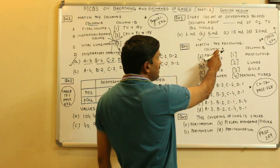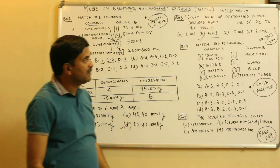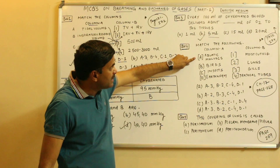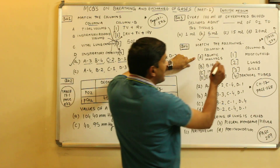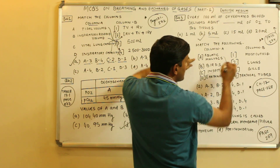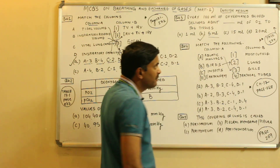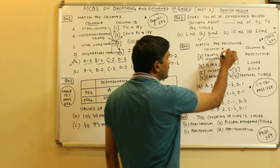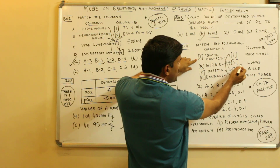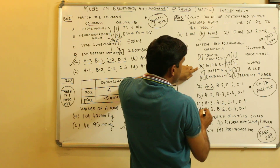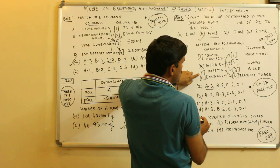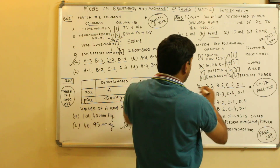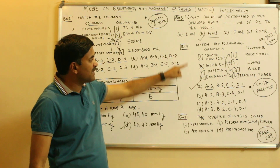Now question four — match the following. Column A should be matched with column B. These are organisms matched with their respiratory organs. Aquatic molluscs respire with the help of gills. Birds respire with the help of lungs. Insects respire with the help of tracheal tubes, and earthworm respires with the help of its moist cuticle. So A matched with 3, B matched with 2, C matched with 4, D matched with moist cuticle. Question number four answer is A.